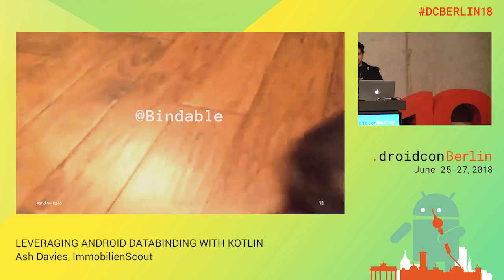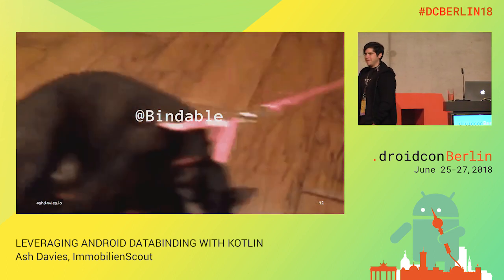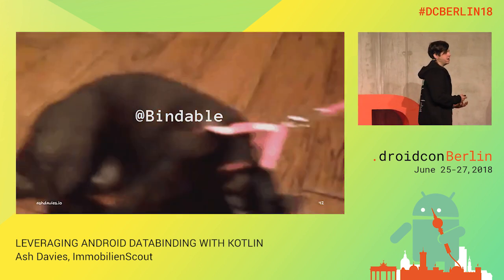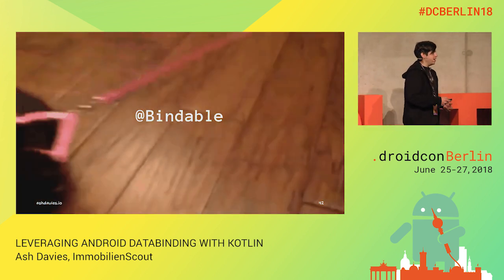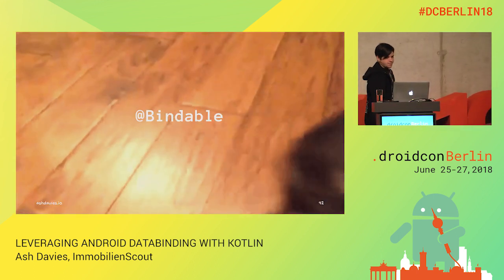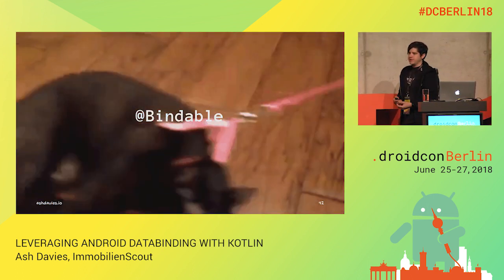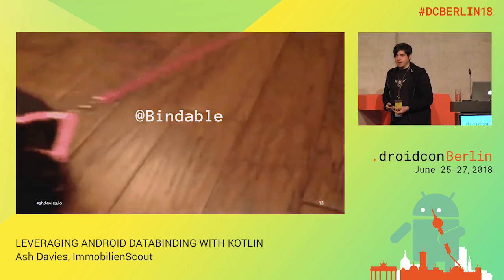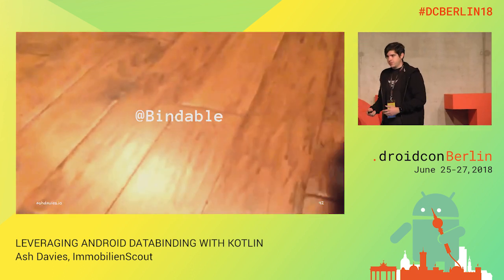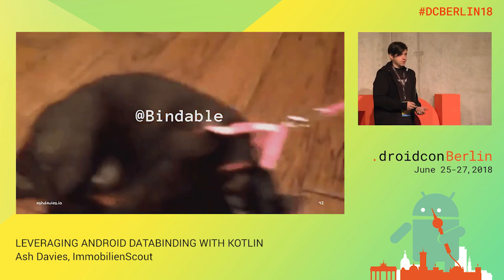Introducing bindable. Remember how observable fields extend from BaseObservable? This is done by actually creating a PropertyChangeRegistry. The @Bindable annotation is applied to properties in our generated binding class, which generates a BR resource identifier — similar to resource identifiers in Android R — so you can access strings, dimensions, layouts, and also bindable resources from your code.